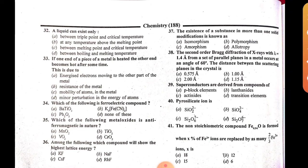Question 37: The existence of a substance in more than one solid modification is known as polymorphism. When one substance has more than one solid modification, we call it polymorphism.